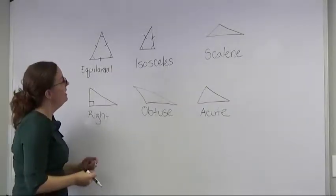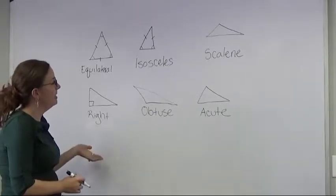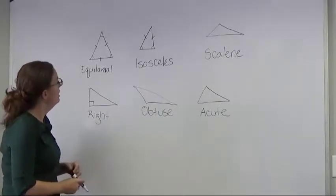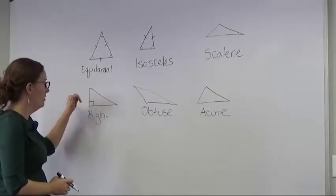A triangle is a polygon, and it has three sides and three angles. They're characterized by their different lengths and sides and angle measures. All of their degrees will equal 180 inside of the triangle.